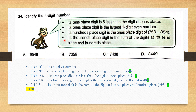Its hundreds place digit is the ones place digit of 758 minus 354. Calculating 758 minus 354 gives 404, and its ones digit is 4, so we replace the hundreds digit with 4. Its thousands place digit is the sum of the tens place and hundreds place digits: 3 plus 4 equals 7, so we replace the thousands digit with 7. The number is 7, 4, 3, 8. The correct answer is option C.